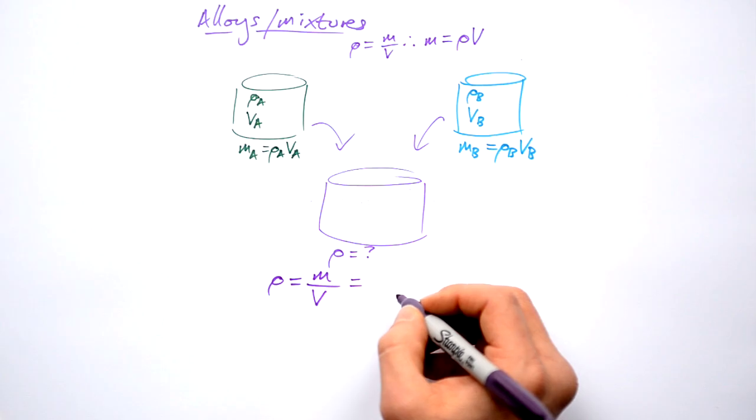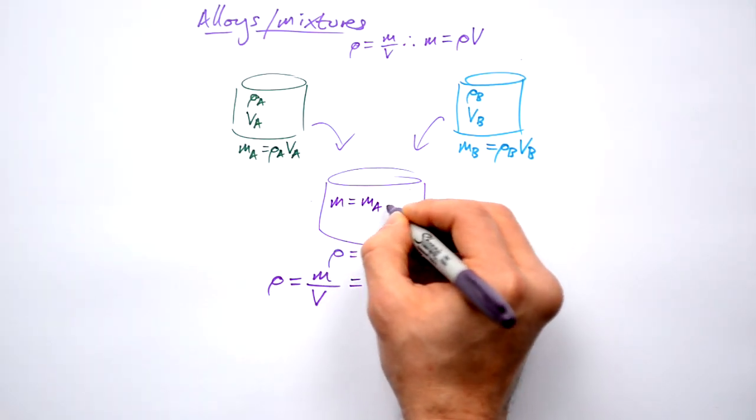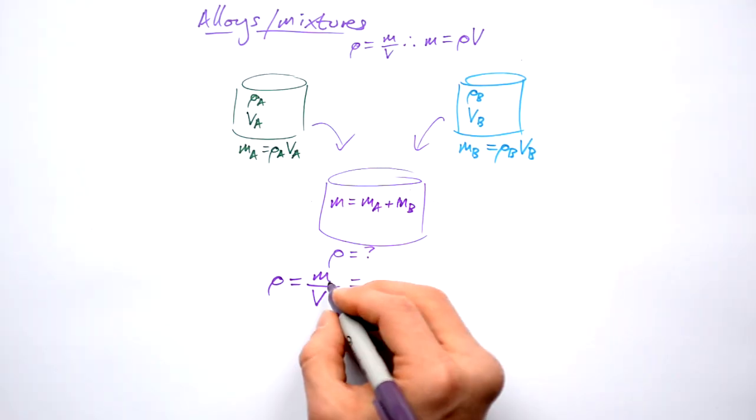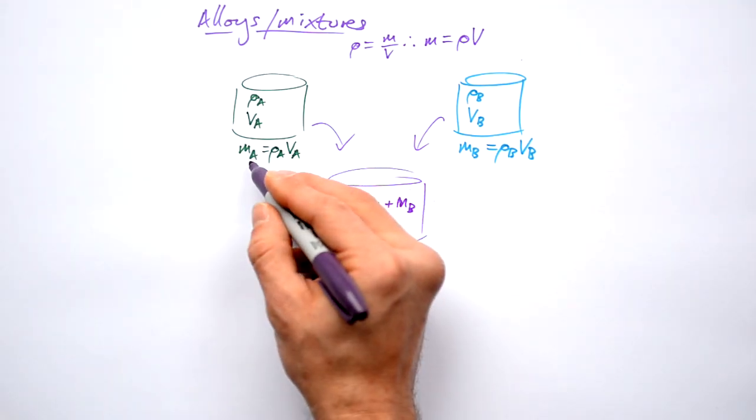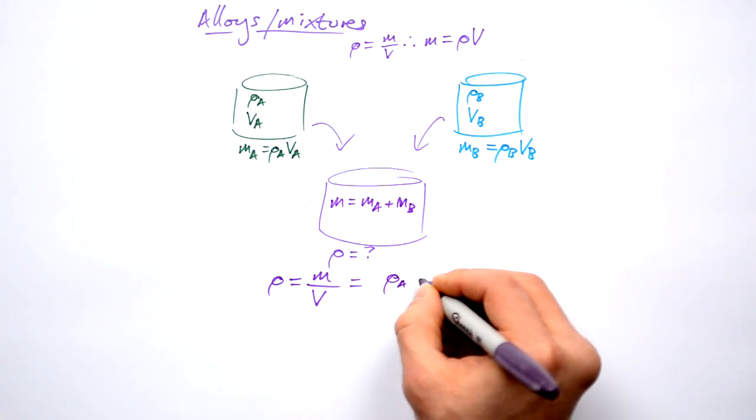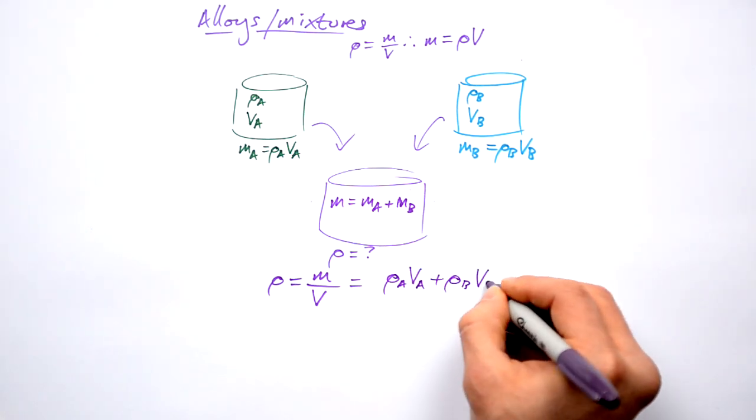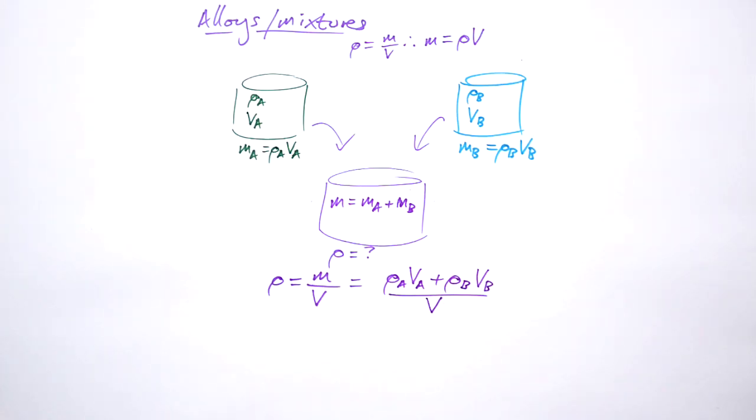So what we know is that the mass of this is going to equal the mass of both materials added up together. So our total mass is going to be equal to the mass of A which is rho A V A plus the mass of B rho B V B divided by the total volume. There you go. That's how you can find out the density of an alloy knowing the density and volumes of the two mixtures that made it.